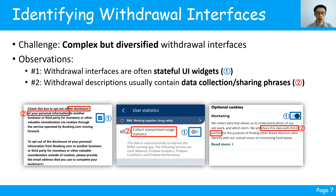In the identifying withdrawal interfaces phase, the challenge is how to identify complex but diverse withdrawal interfaces. We observe two key features of those interfaces. Firstly, mobile withdrawal interfaces are typically UI widgets that allow users to switch their withdrawal choice, such as checkboxes and switch preferences. Secondly, the withdrawal interfaces always contain certain data collection or sharing phrases — for example, 'the disclosure of your personal information' and 'share this data with third parties.'